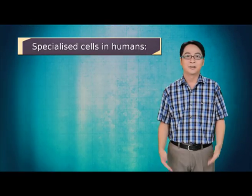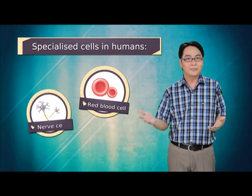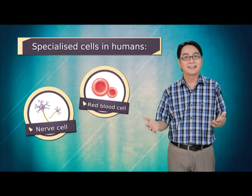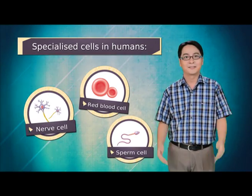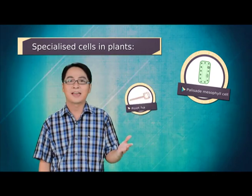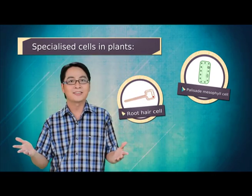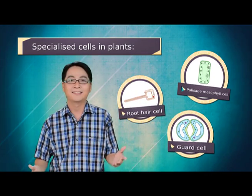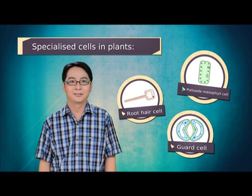In humans, the red blood cell, the nerve cell and the sperm cell. In plants, the palisade mesophyll cell, the root hair cell and guard cells.